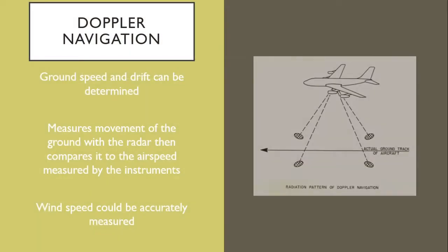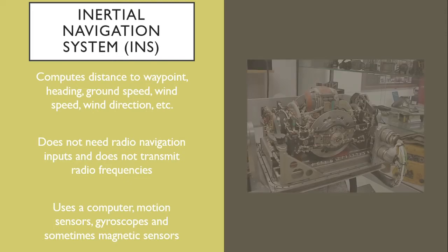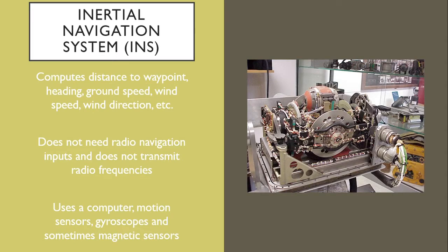Doppler navigation allows ground speed to be measured using the fundamental scientific principle called Doppler Shift. Inertial Navigation System is an autonomous dead reckoning device that computes navigation data such as present position, distance to waypoint, heading, and wind speed.